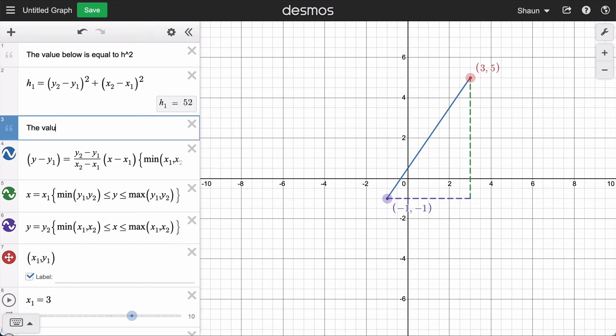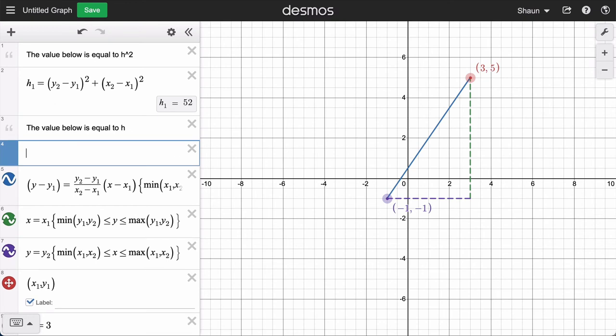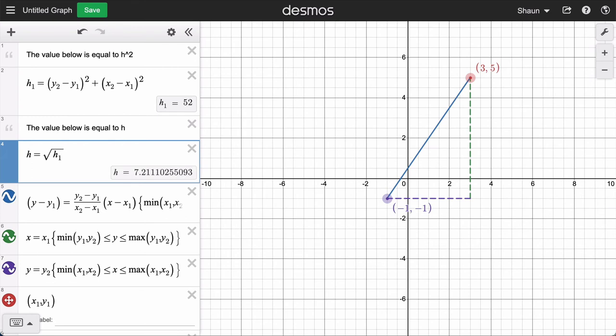So now we can say the value below is equal to h, the hypotenuse. So I'm just typing h equals the square root of h1. So you can see it calculating that right there.